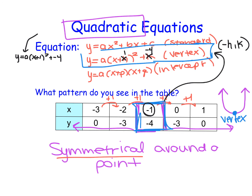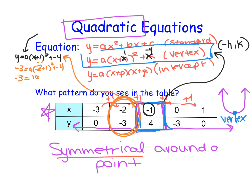To write the equation of a quadratic, we need the vertex and then one additional point. I'll choose the point negative 2 comma negative 3. Substituting in temporarily: negative 3 equals a times negative 2 plus 1 squared plus negative 4. The inside becomes negative 1, so negative 1 squared is 1 — giving negative 3 equals 1a plus negative 4. Adding 4 to each side, we find that a is equal to 1.